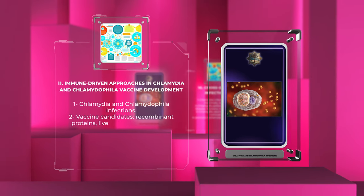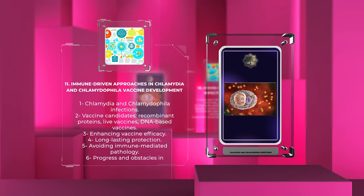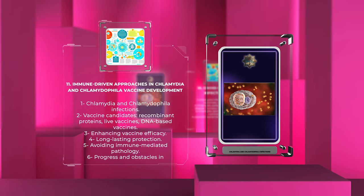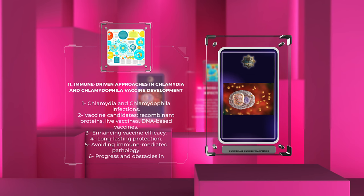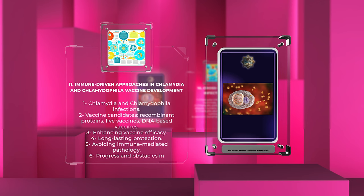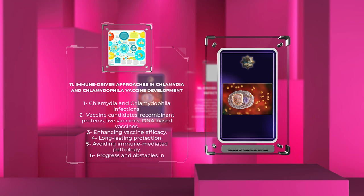Developing vaccines against chlamydia and chlamydophila infections is challenging due to complex interactions between the host and pathogen. Promising vaccine candidates include recombinant proteins, live vaccines, and DNA-based vaccines. Enhancing vaccine efficacy through immune-driven approaches is being explored, but challenges remain in achieving long-lasting protection and avoiding immune-mediated pathology.